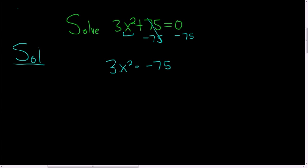To finish solving for x², it's being multiplied by 3, so we'll divide both sides by 3. And so we have x² = -25.